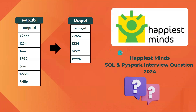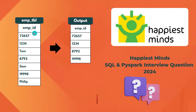Hello everyone, welcome back to the channel. In this video I will be covering one of the interview questions recently asked in a HiveSpamine interview. Given an employee table with an employee ID column with all these values, we need to get only records which have integer values. There are four records with integer values and three records with string values, which we should not get in the output. This is asked to be solved in both SQL and PySpark.